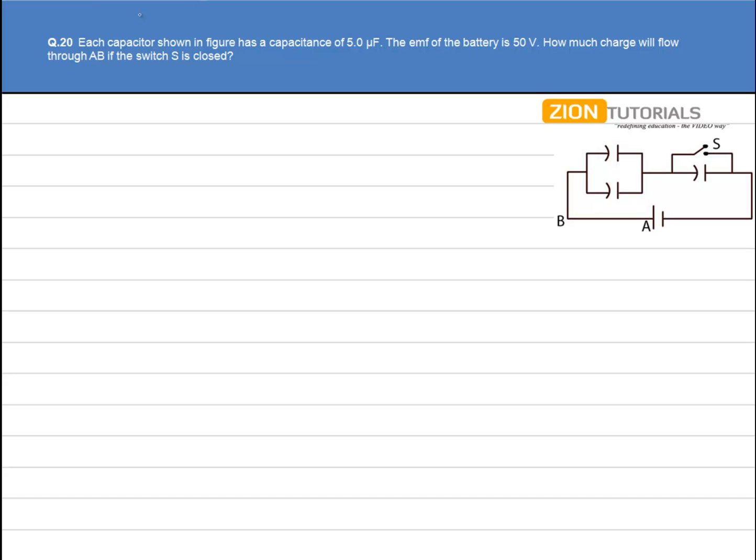Each capacitor shown in figure has a capacitance of 5 microfarad. The emf of a battery is given as 50 volt. How much charge will flow through AB if switch S is closed? Initially S is open.